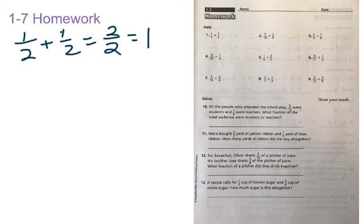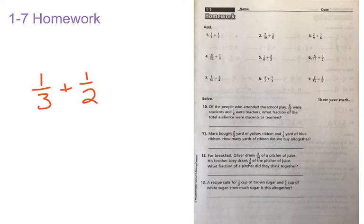Now we're looking at adding fractions that have unlike denominators, and if we look at number 1, we have 1 third plus 1 half. I'm going to get rid of this, and I'm working to get a common denominator. I can see here that I have 3 and 2 as my denominators, and I'm looking for the least common multiple.